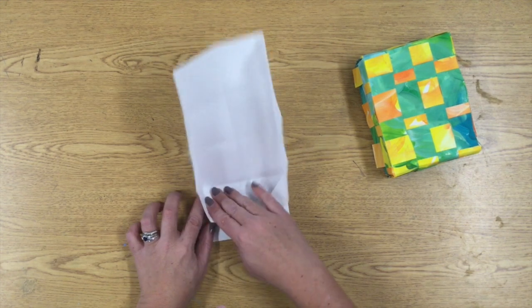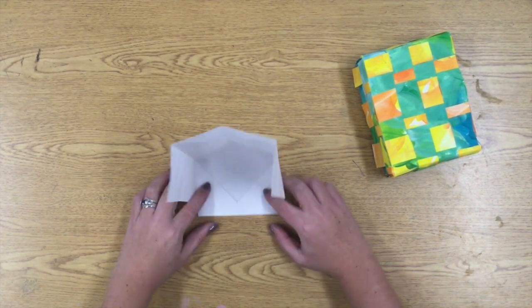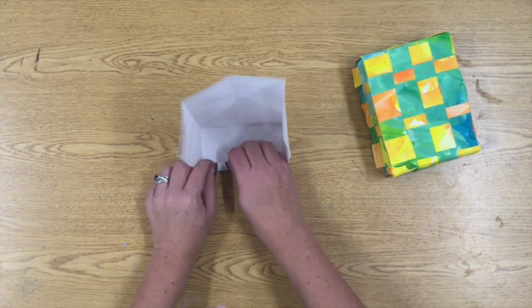All right, I'm going to do it again. Put my finger right where I want the fold to be. Fold that side over. It's really hard to explain it but you can see how it makes that triangle.